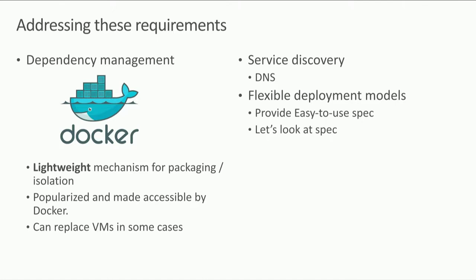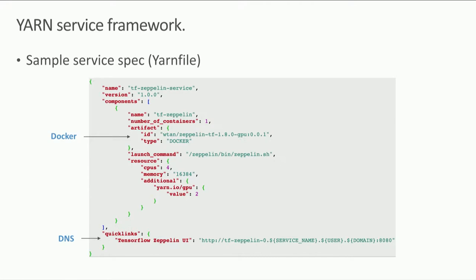To address these requirements, for dependency management we introduced Docker-on-YARN support — a lightweight mechanism for packaging and isolation that can replace virtual machines in many cases. For service discovery, we use DNS: every service gets a pre-established DNS entry so different services can communicate without modifying their RPC or other models. We also support a very flexible deployment spec.